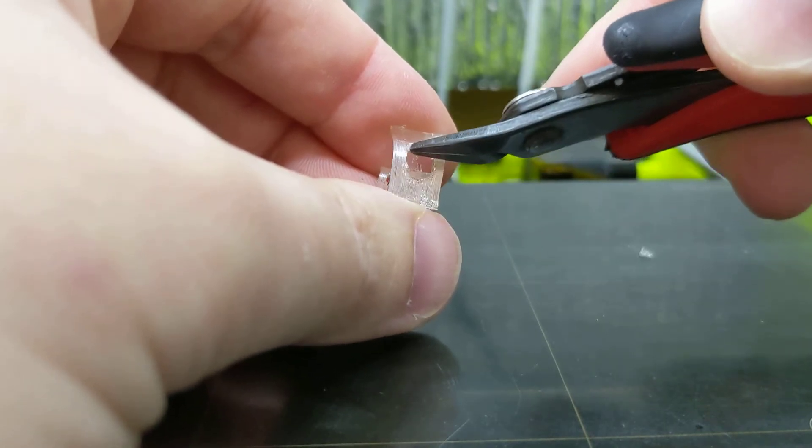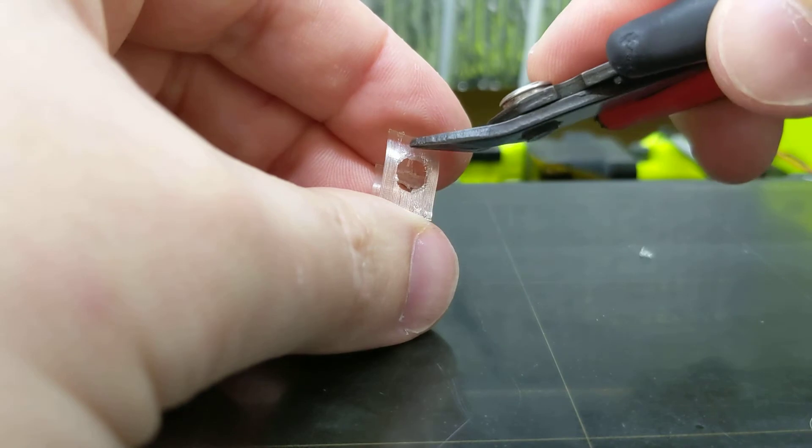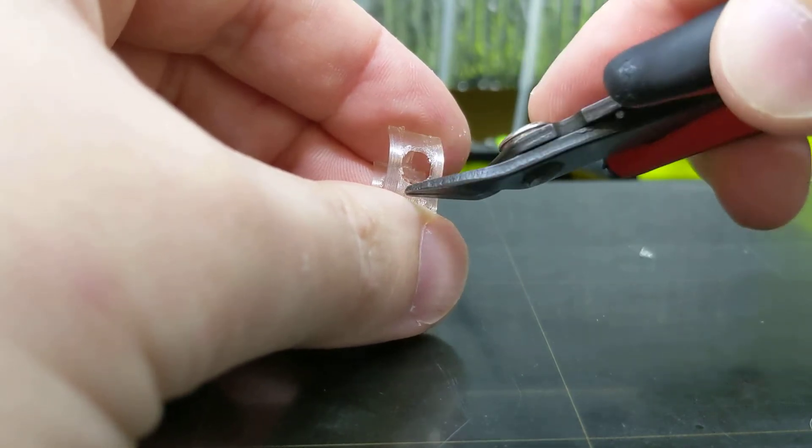But if you have strings on this side where the stem is, they can get caught, right? And we don't want that. And the place they'll get caught is on either side here. They won't really get caught on the top and bottom. They'll get caught on the sides.